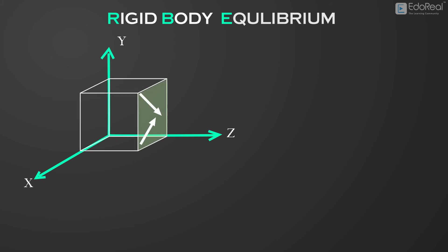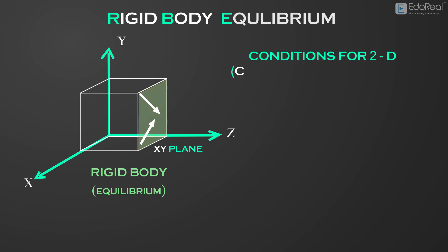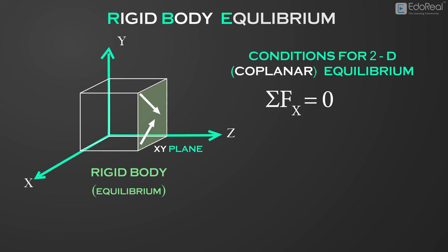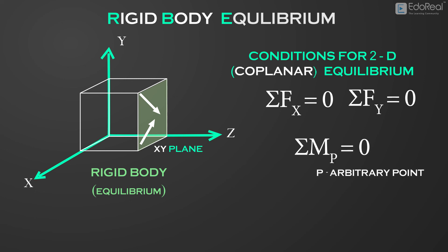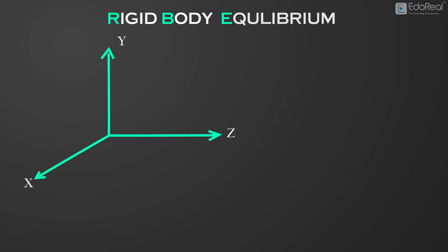If there are two forces acting on a rigid body that is in equilibrium, and if they are in the same plane, the conditions for 2D equilibrium are given as σfx equals zero, σfy equals zero, and the sum of moment of forces σmz equals zero.